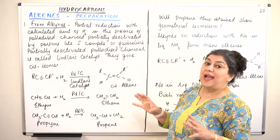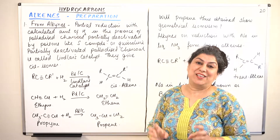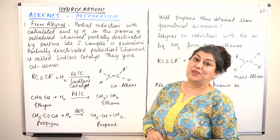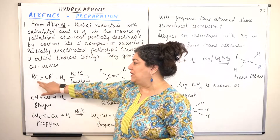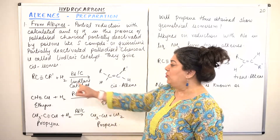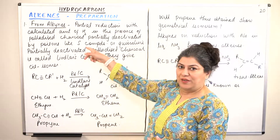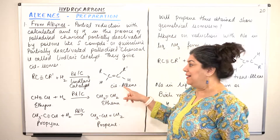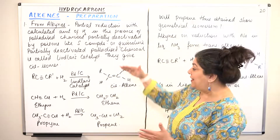So Lindlar's catalyst — what happens as a result of this reaction is very interesting. It only gives the cis isomer. When you use Lindlar's catalyst, it only gives you the cis isomer; it does not give you the trans isomer. For example, if R and R' are alkyl groups on an alkyne (R-C≡C-R'), reacting with one molecule of hydrogen in the presence of Lindlar's catalyst — which is pelletized charcoal poisoned with sulfur compounds or quinoline — the product will always be the cis alkene. Cis means both alkyl groups are on one side of the carbon-carbon double bond, and both hydrogens added are on the same side.